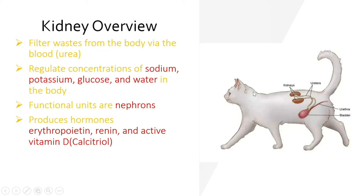Just a quick overview of the kidneys — I'm not going to go too in-depth because this is what we did yesterday. The kidneys filter waste from the body via the blood, and these wastes are known as urea. They regulate concentrations of sodium, potassium, glucose, and water in the body.